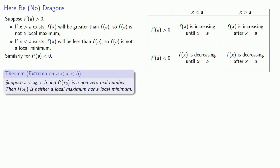Suppose I have some value of x between a and b and the derivative at that value is a non-zero real number. Then, because I have values that are larger than x0 and values that are smaller than x0, f(x0) will not be a local maximum and will not be a local minimum.